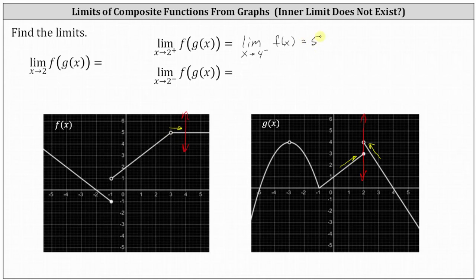If the limit as x approaches two from the left of f of g of x also equals five, then the limit as x approaches two of the composite function is also equal to five. If we don't get five, then the original limit does not exist.